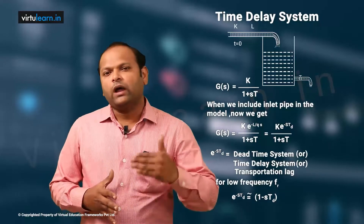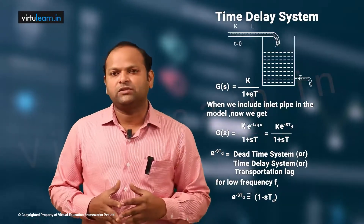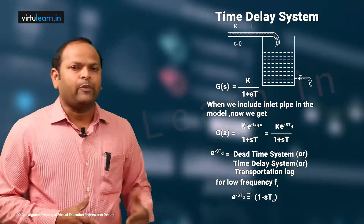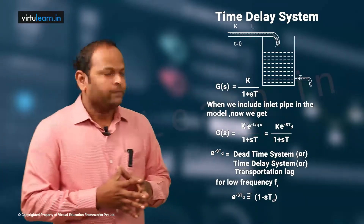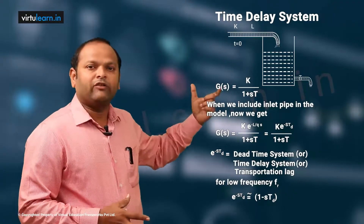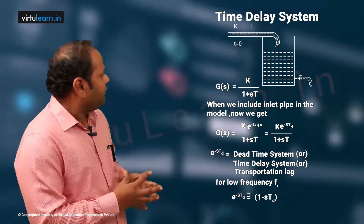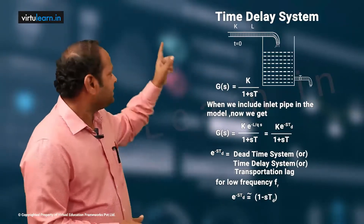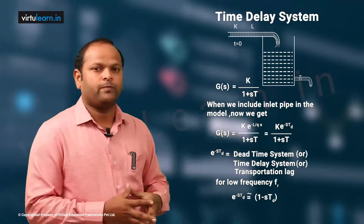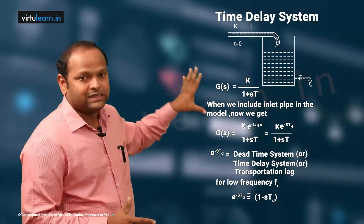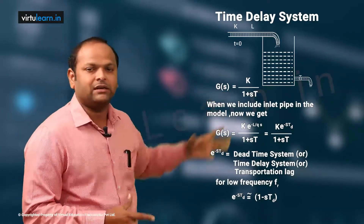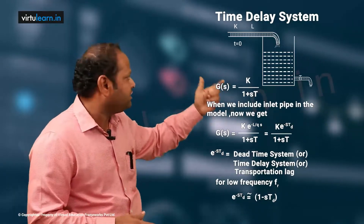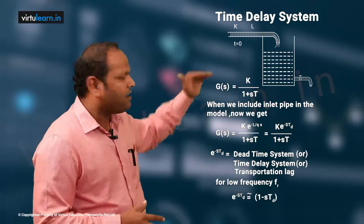We will see how to handle time delay systems using the Routh-Hurwitz (RH) criteria. A time delay system can be illustrated with a liquid level system: a tank with some level, inflow, and outflow. When modeled in terms of capacitances, the transfer function is G(s) = k / (1 + sτ).